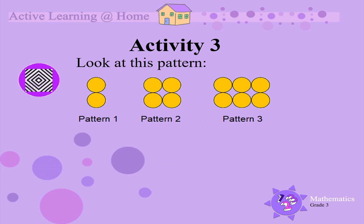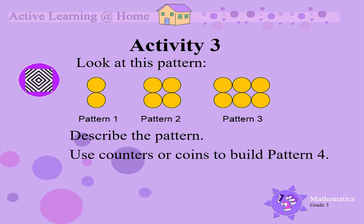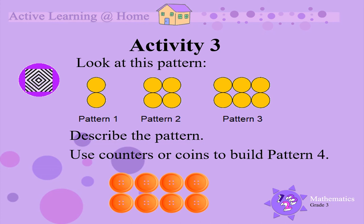Activity 3. Look at this pattern. Describe this pattern. We can describe this pattern by saying that we add 2 circles each time. Now use your counters or coins to build pattern 4. Pattern 4 should have 8 counters and it should look like this.